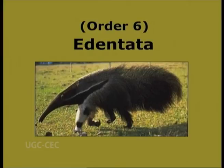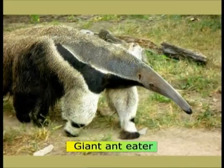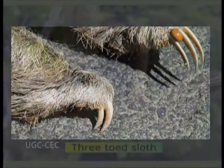Order 6: Edentata. Edentates meaning toothless. In these animals, the teeth are either absent or reduced only to molars without enamel. Toes are present with long, strong, curved claws. Examples of this order are giant anteater, armadillo, and three-toed sloth.